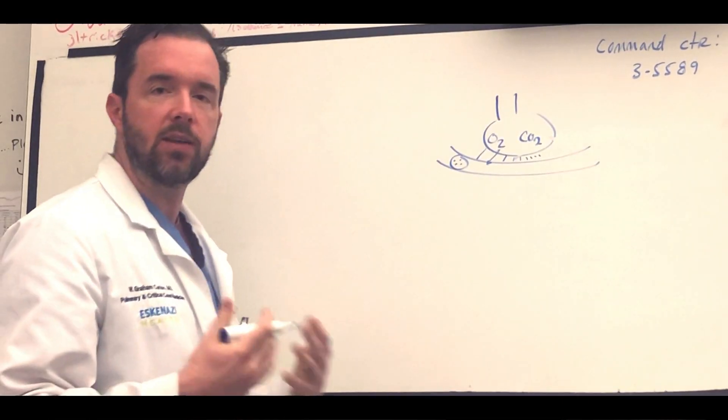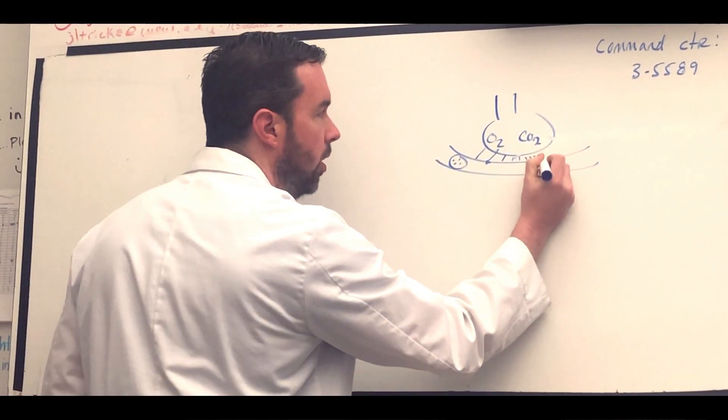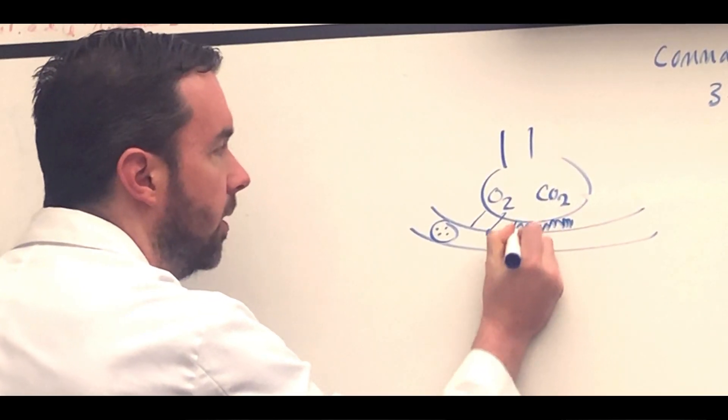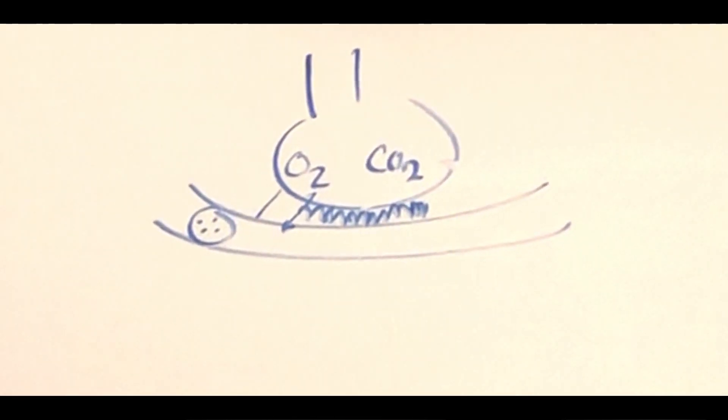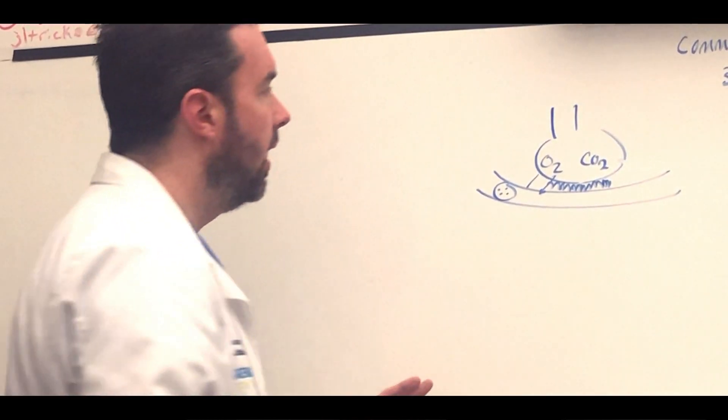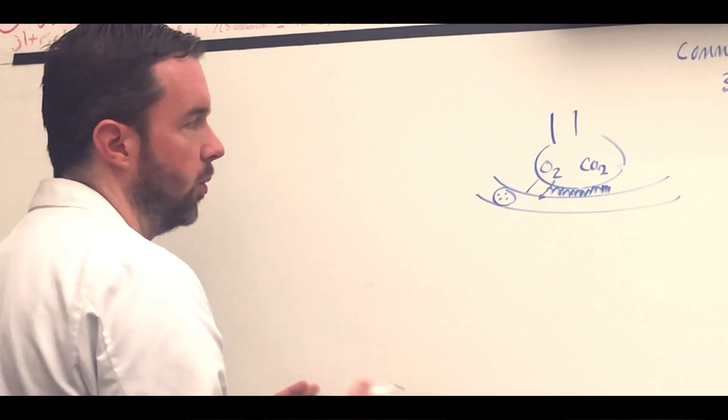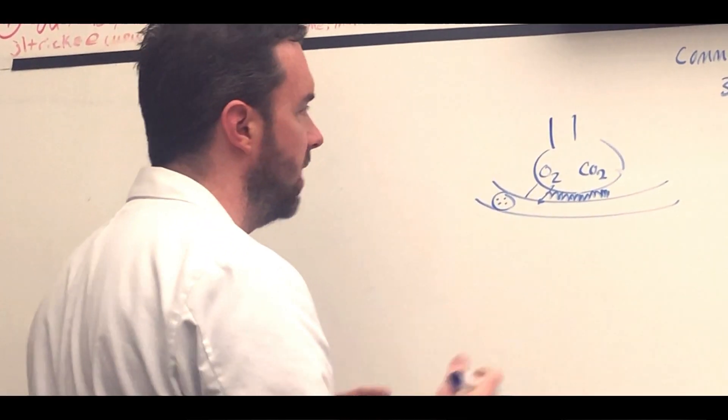In diseases that affect oxygenation, what happens is we start blocking this membrane, like in ARDS. So now as the blood flows past, it becomes harder and harder for oxygen to diffuse across. That's one concept we're going to revisit as we talk about our approaches to oxygenation.